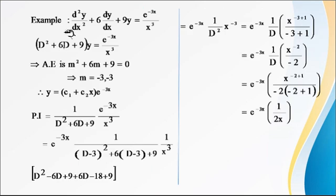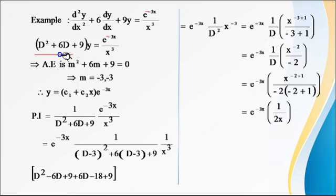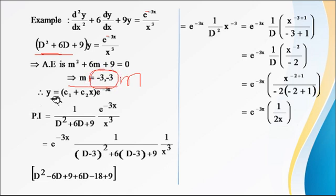See one more example. Solve d²y/dx² + 6(dy/dx) + 9y = e^(−3x) / x³. Write in operator form: (D² + 6D + 9)y = e^(−3x) / x³. The auxiliary equation is m² + 6m + 9 = 0, giving m = −3 and −3. These roots are real and equal, so CF = (c₁ + c₂x)e^(−3x).